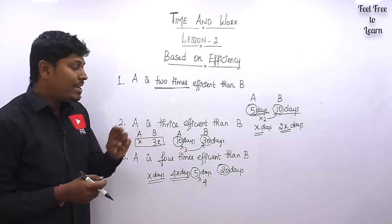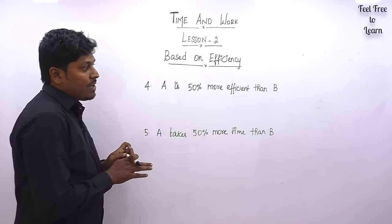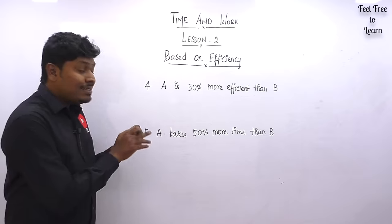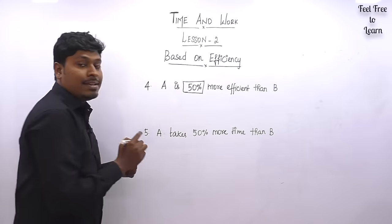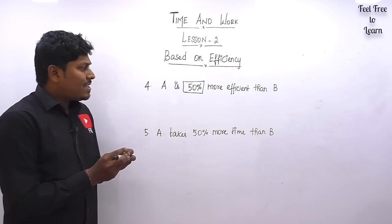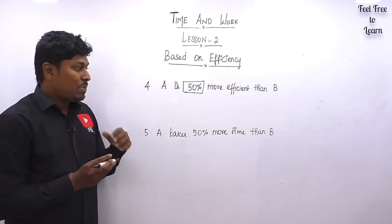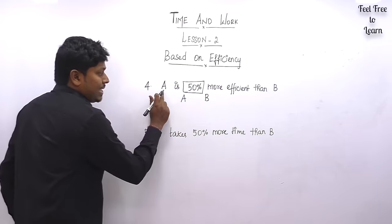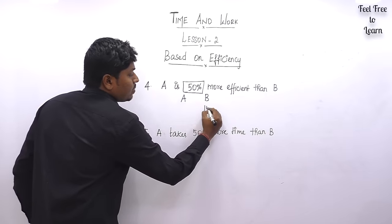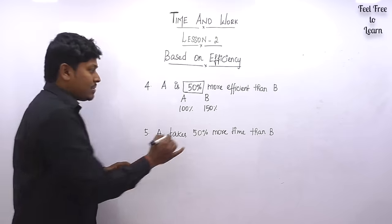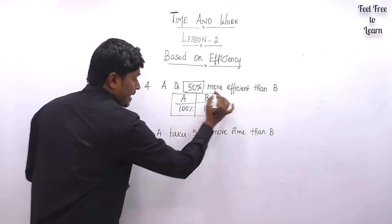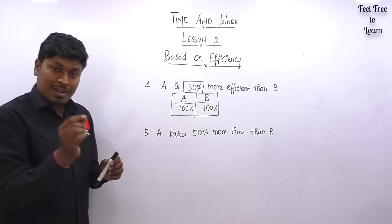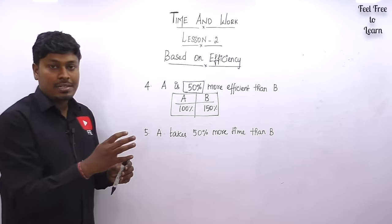All three points are important. Now point number four: A is 50 percentage more efficient than B. In the first three points we talked about two times or three times efficiency, but in this case efficiency is based on percentage. There are various methods to solve percentage-based questions. My suggestion for beginners: apply a simple logic. If A is 50 percentage more efficient, then B is 150 percentage and A is 100 percentage. This idea will help you crack all such questions. Shortcuts won't help with tough-level questions — only the right methodology will.